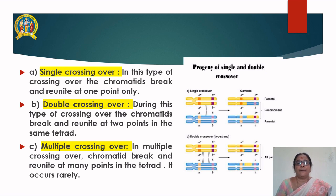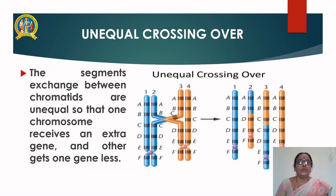The diagrams here illustrate in detail the three categories of crossing over: single, double, and multiple crossing over. Unequal crossing over: the segments exchanged between chromatids are unequal, so that one chromosome receives an extra gene and the other gets one gene less.